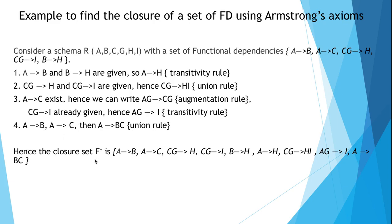Finally, we get the closure set F+. It includes the already defined dependencies — a to b, a to c, cg to h, cg to i, b to h — along with the derived dependencies: a to h, cg to hi, ag to i, and a to bc. This is how the closure set of functional dependencies is derived.